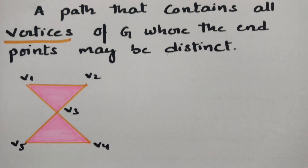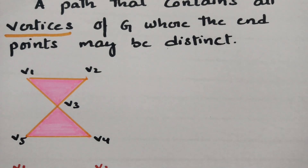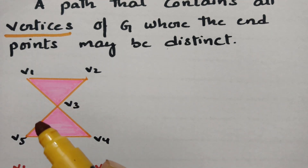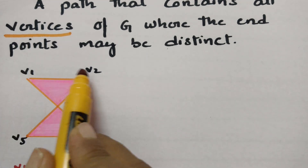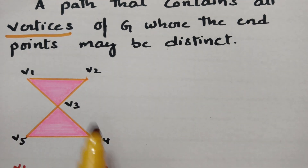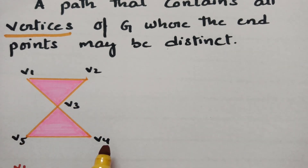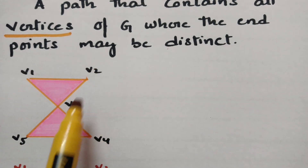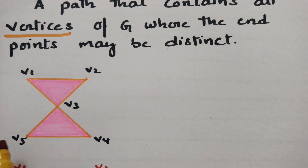Let me give you an example. In this graph G, how many vertices are there? There are five vertices: v1, v2, v3, v4, and v5. I have to cross all these five vertices exactly once, without any repetition.